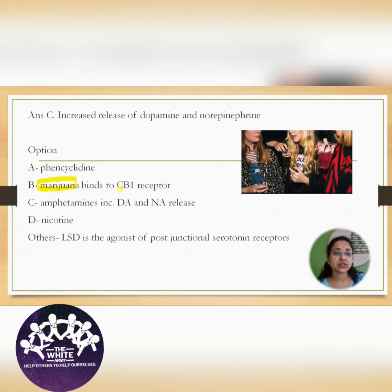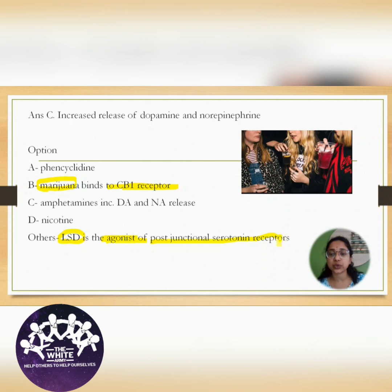One clarification: marijuana binds to the CB1 receptor, which explains Option B. One more extra point to remember: LSD, that is lysergic acid diethylamide, is mainly an agonist at the postjunctional serotonin group of receptors.